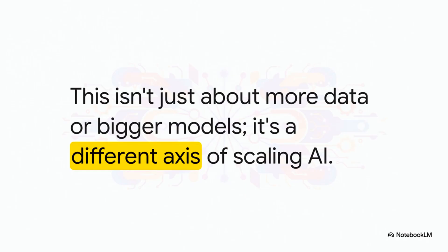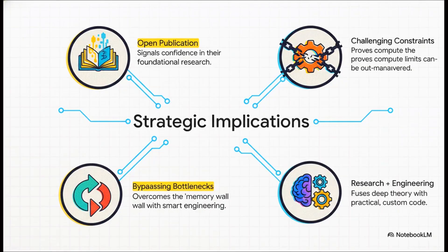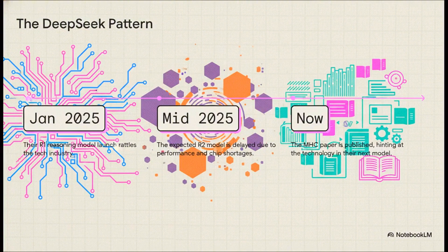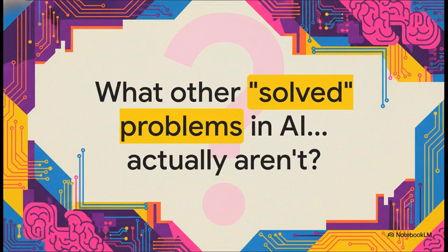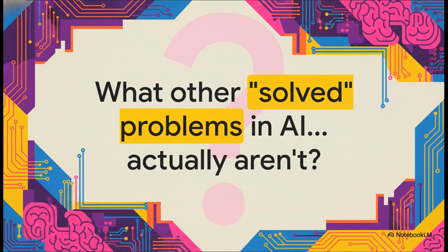So this isn't just about making models bigger. It's a whole new, smarter blueprint for building AI. And you have to see this as more than just the paper. It's a huge strategic play by DeepSeq. This is classic DeepSeq. They drop foundational research like this right before a massive new model release. Which really makes you wonder, what other solved problems in AI aren't actually solved at all?